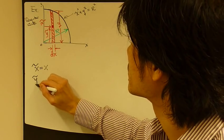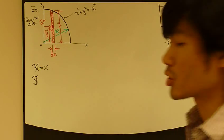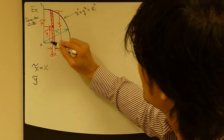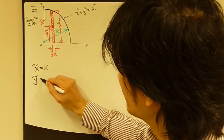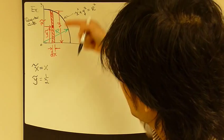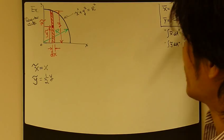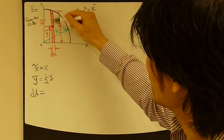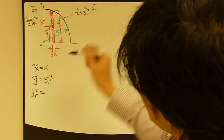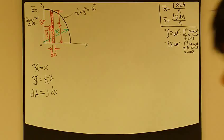And y tilde, the centroid location, the y-coordinate for the centroid of the element or strip, is exactly one-half of the height of the strip, which is one-half of y. And we need dA, elemental area. The area of this guy is simply the height, which is y, times dx.